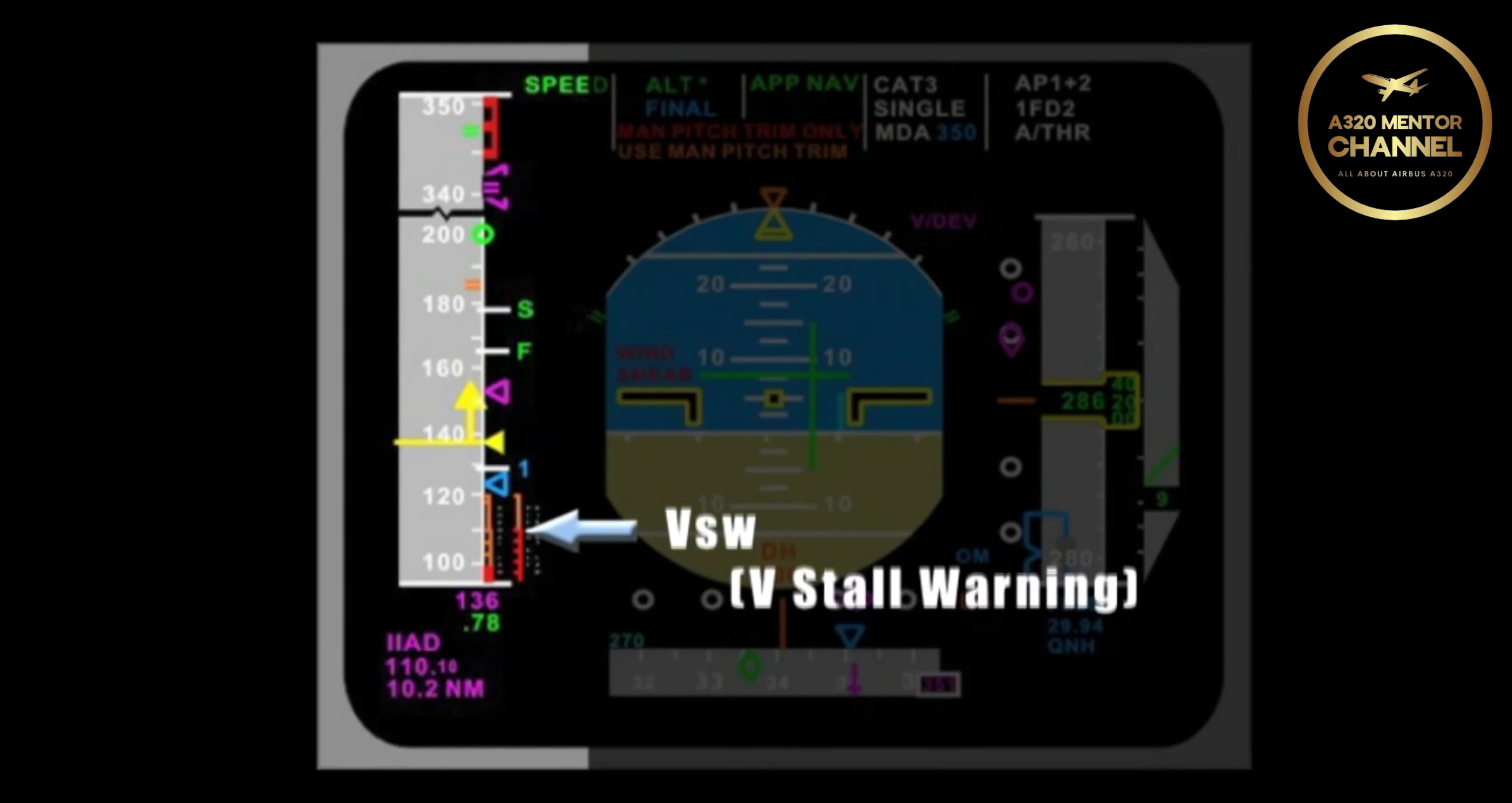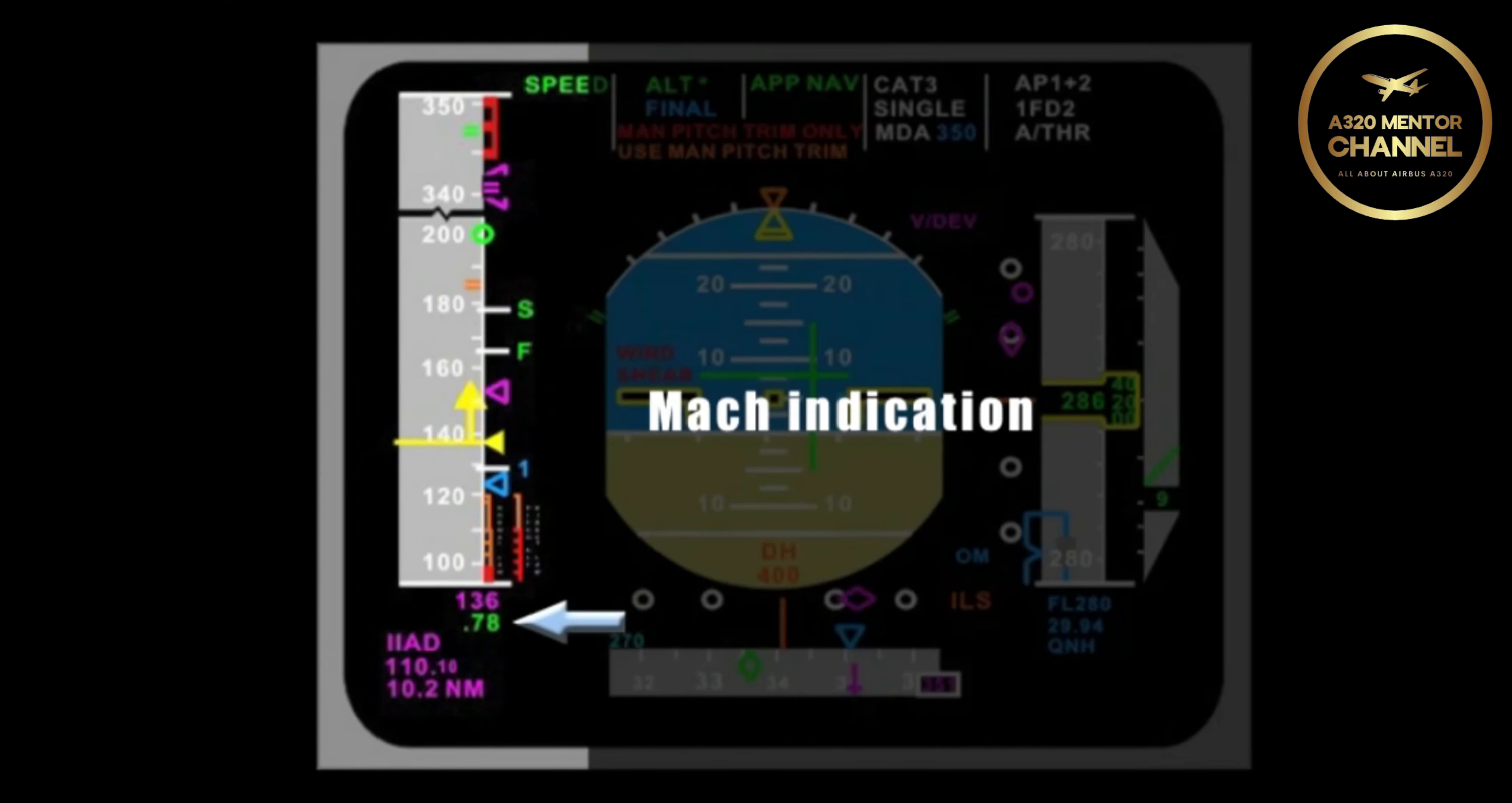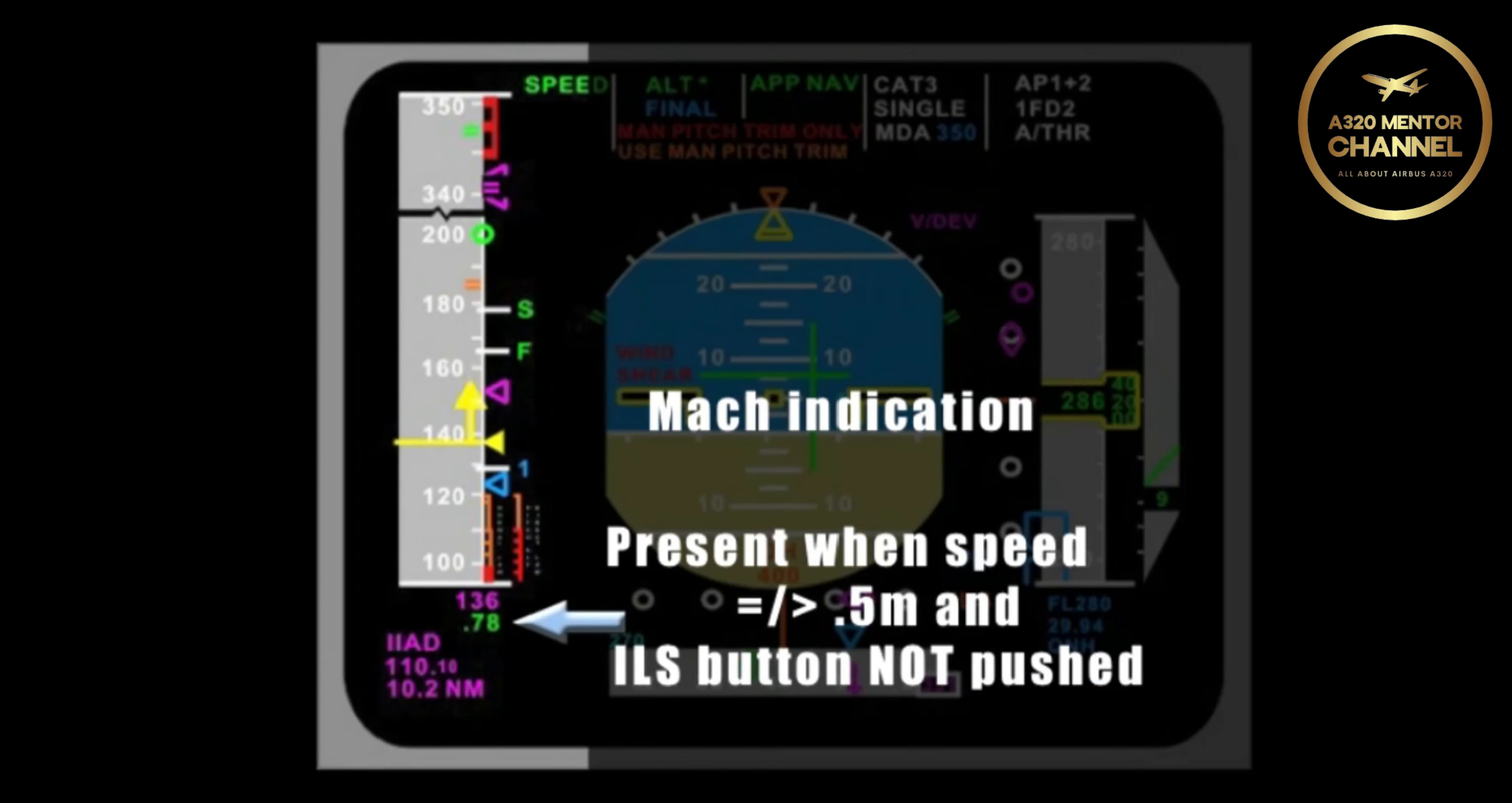What is the magenta 136 below the speed tape? Magenta equals managed. This is the managed speed, but is off scale. It's the same as the yellow speed indicator, except it is off scale low. We can also see a similar speed, which is off scale high, at the top of the speed tape. What is the .78 indication below the 136 indication? That is a Mach indication. It is only present when the aircraft speed is Mach .5 or greater, and the ILS button is not pushed.